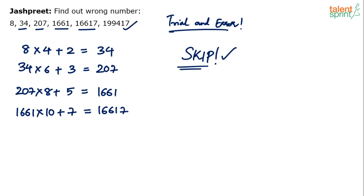Let's find out what the number should be. The next step should be 16,617 × 12 + 11, which will give you a number that is definitely not 199,417.